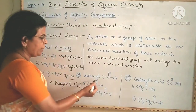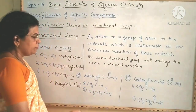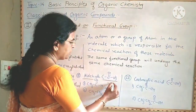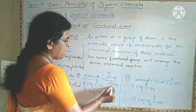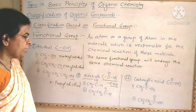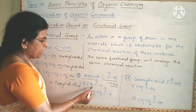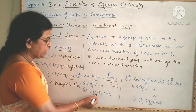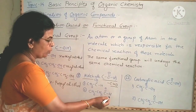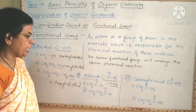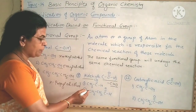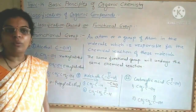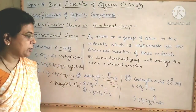The second example is aldehyde. The functional group of aldehyde is -CHO (also written as -C=O with an H). Examples include CH3CHO, which is acetaldehyde, and CH3CH2CHO, which is propyl aldehyde. These two compounds possess the same functional group — that is aldehyde — and therefore they undergo similar types of chemical reactions.